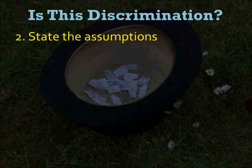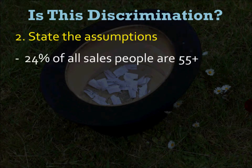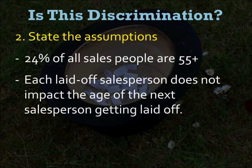Second, we state the assumptions. We have to assume that 24% of all salespeople are 55 and over — we got that information from a government source. We also have to assume that each laid-off salesperson does not impact the age of the next salesperson getting laid off. Basically, you treat each layoff as a separate transaction. That's the idea of independence.